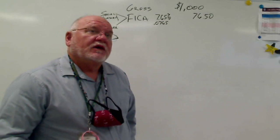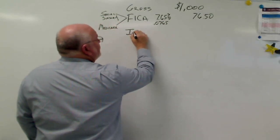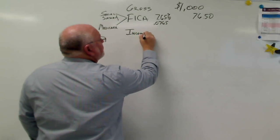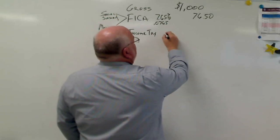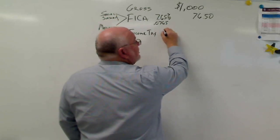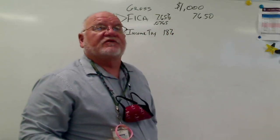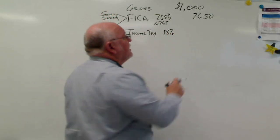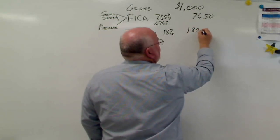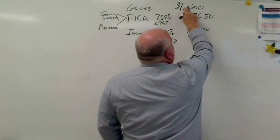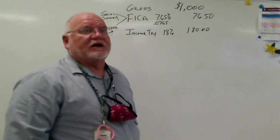Now we have income tax. And with income tax, we're going to come in and say that, let's say you're in the, there are different tax brackets. And so let's say you're in the 18% tax bracket. If you're in 18% tax bracket, you're going to pay $180 out of that $1,000. So it's 18 times that, and that's going to come out of your paycheck also.